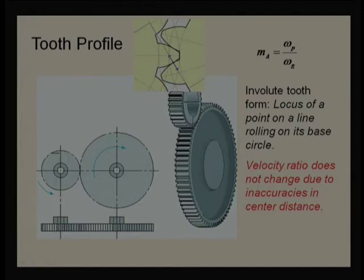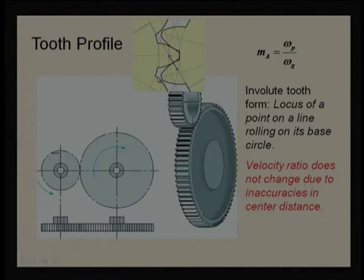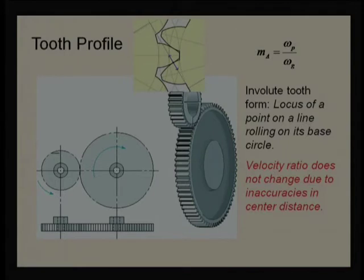Rolling motion has a lesser coefficient of friction compared to sliding friction. We give more emphasis to rolling, and secondly they need to have positive engagement. Above all, they need to have a constant speed ratio — that is a major advantage of the involute gear profile. They maintain constant speed ratio, which is a slightly complex subject but will be elaborated in the lecture.